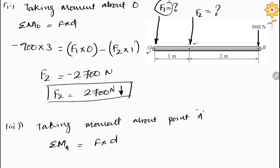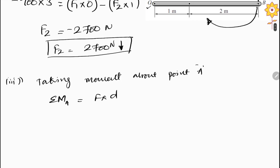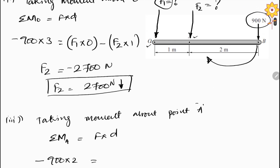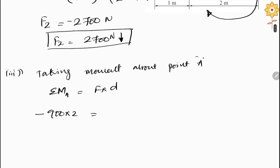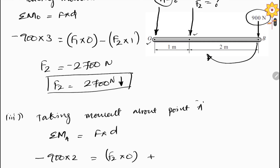This 900 newton force about point A is acting in a clockwise direction, and the distance is 2 meters, so it will be minus 900 into 2 meters. At point A, F2 into 0 equals zero because there is no distance, plus F1.